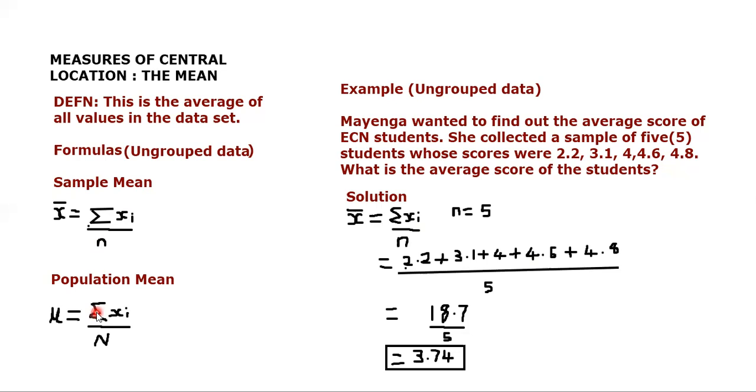The only difference is that in this case we are using parameters, which means the symbols like mu and capital letter N. In this case, we are using statistics - a statistic, a particular characteristic of a sample.